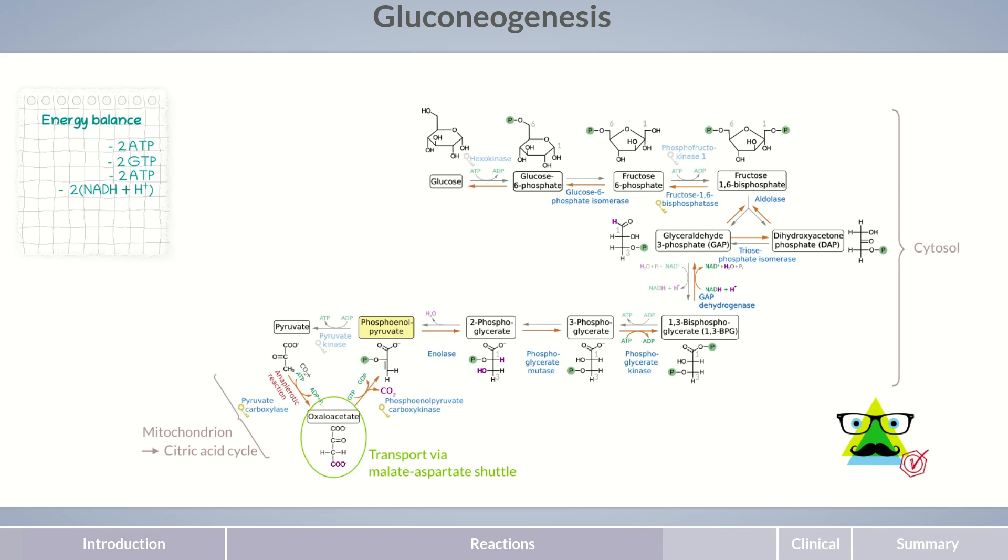Instead, the eleventh and final reaction of gluconeogenesis is performed by glucose 6-phosphatase. Although this enzyme is specific to gluconeogenesis, it's not a key enzyme in the process. It's a membrane protein located in the lumen of the endoplasmic reticulum. Therefore, glucose 6-phosphate is transported from the cytosol into the endoplasmic reticulum for the final reaction step. This task is performed by glucose 6-phosphate translocase. In the endoplasmic reticulum, the last remaining phosphate group is cleaved from the molecule, yielding glucose and free phosphate. Again, the reaction doesn't generate ATP.